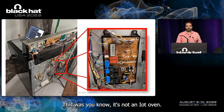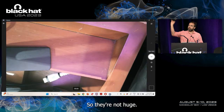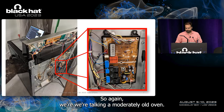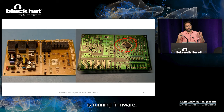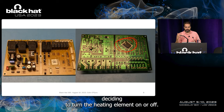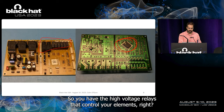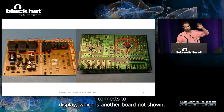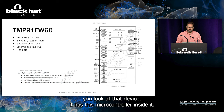The control board — I have one here — isn't huge. You can see date codes from around 2012. Even this moderately old oven has a microcontroller running firmware that measures temperature and decides to turn the heating element on or off. High-voltage relays control the elements; the microcontroller makes the decisions and receives sensor inputs. It also connects to a display board.